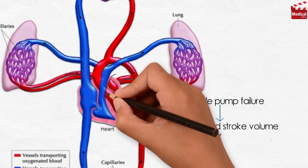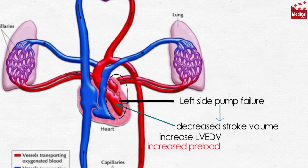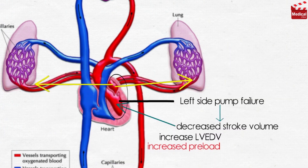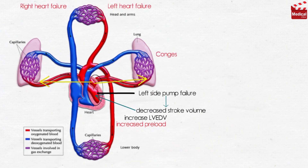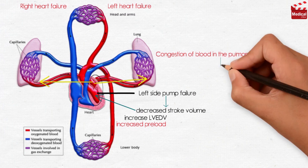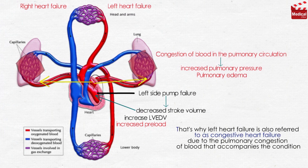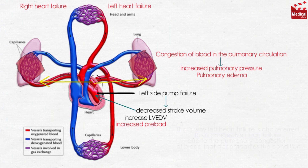Then blood pools in the ventricle and atrium, and eventually backs up into the pulmonary veins and capillaries, leading to congestion of blood in the pulmonary circulation. That causes increased pulmonary pressure and pulmonary edema. That's why left heart failure is also referred to as congestive heart failure, due to the pulmonary congestion of blood that accompanies the condition.